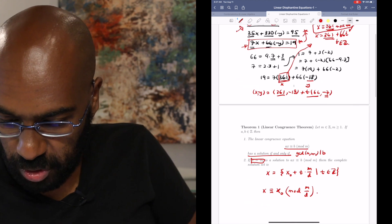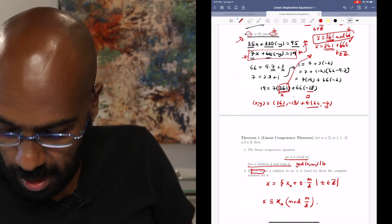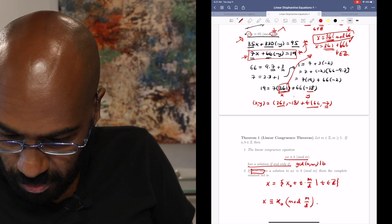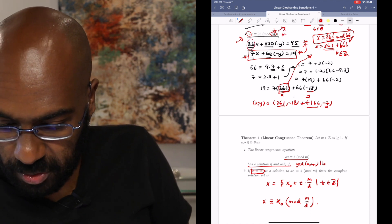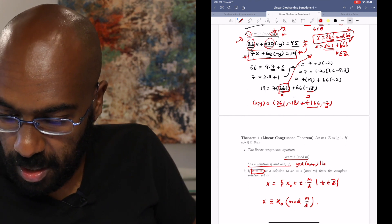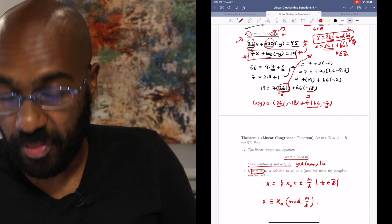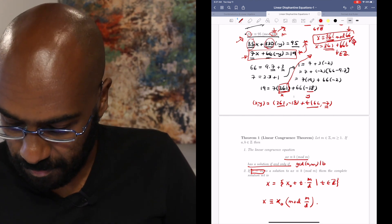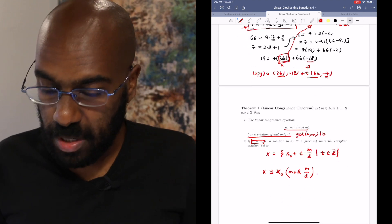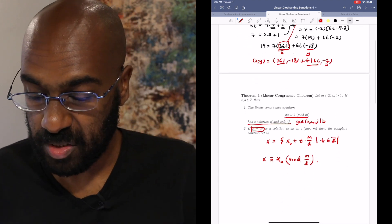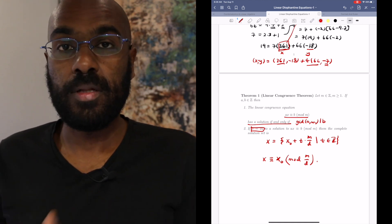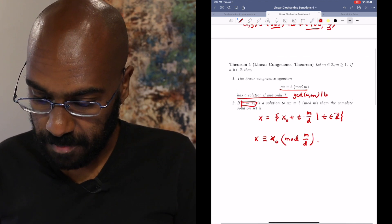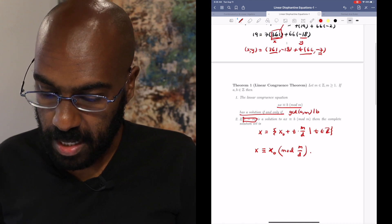And we had that situation right over here, our m was 330, our d was 5, that was the common factor between 35 and 330, and our solution set was modulo 330 divided by 5. So we're not giving a proof of this here because the proof mimics the process that we saw with linear Diophantine equations.